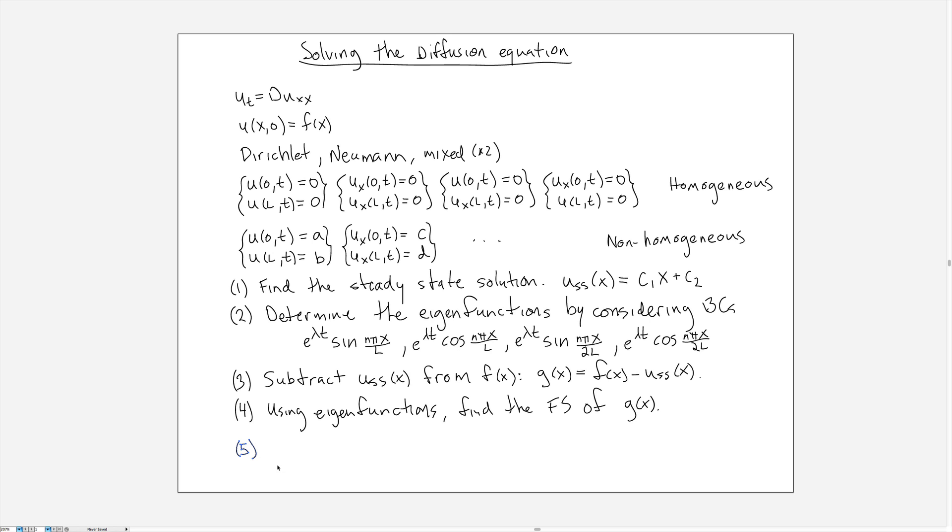Finally the fifth step is to, once we have these Fourier coefficients, we can just write down the solution U of X T as the steady state plus a sum of eigenfunctions with e to the lambda t's stuck in front appropriately. And these coefficients are the ones that we've calculated for the Fourier series of G of X.